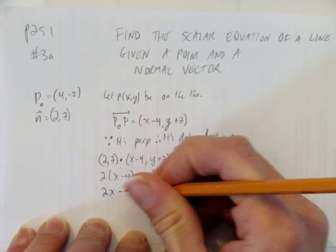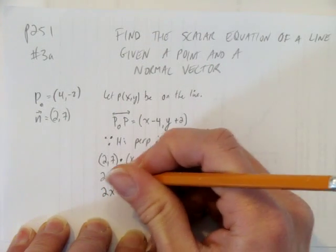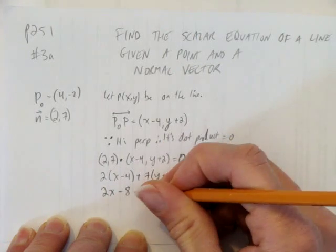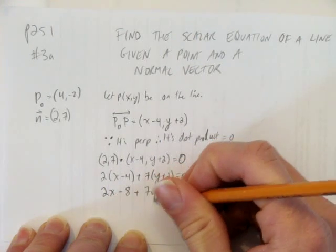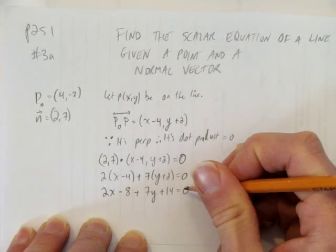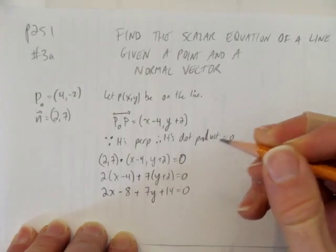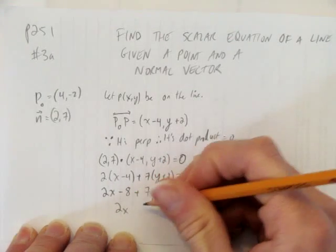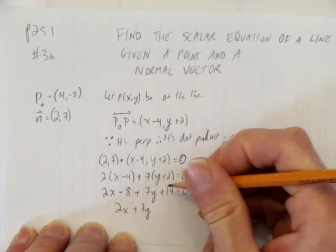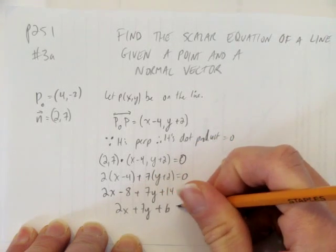We expand by distributing that 2 into the brackets, and same thing with the 7. We just multiply it in the brackets. And all that's left now is to simplify. We have 2x, 7y, and then minus 8 plus 14 gives plus 6.